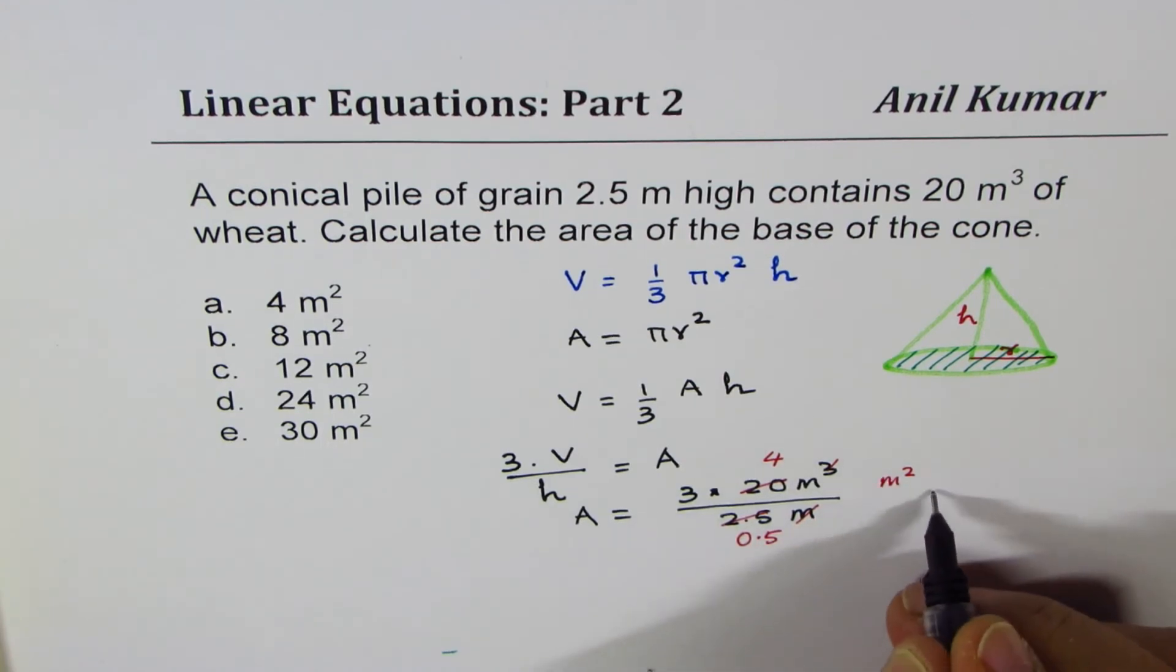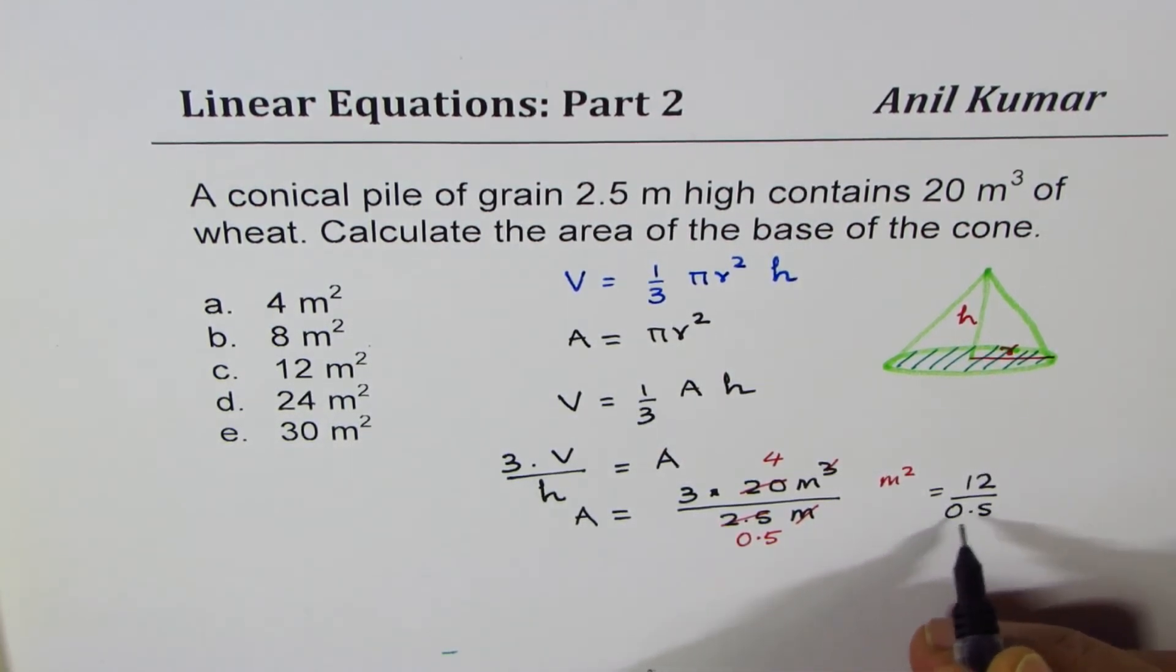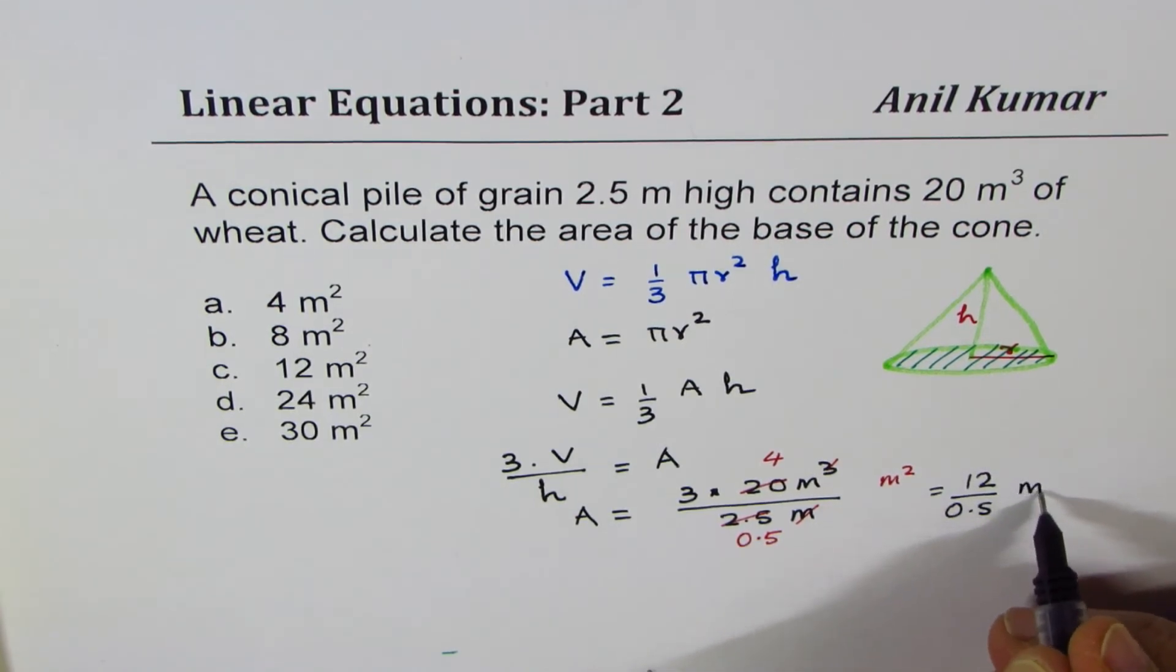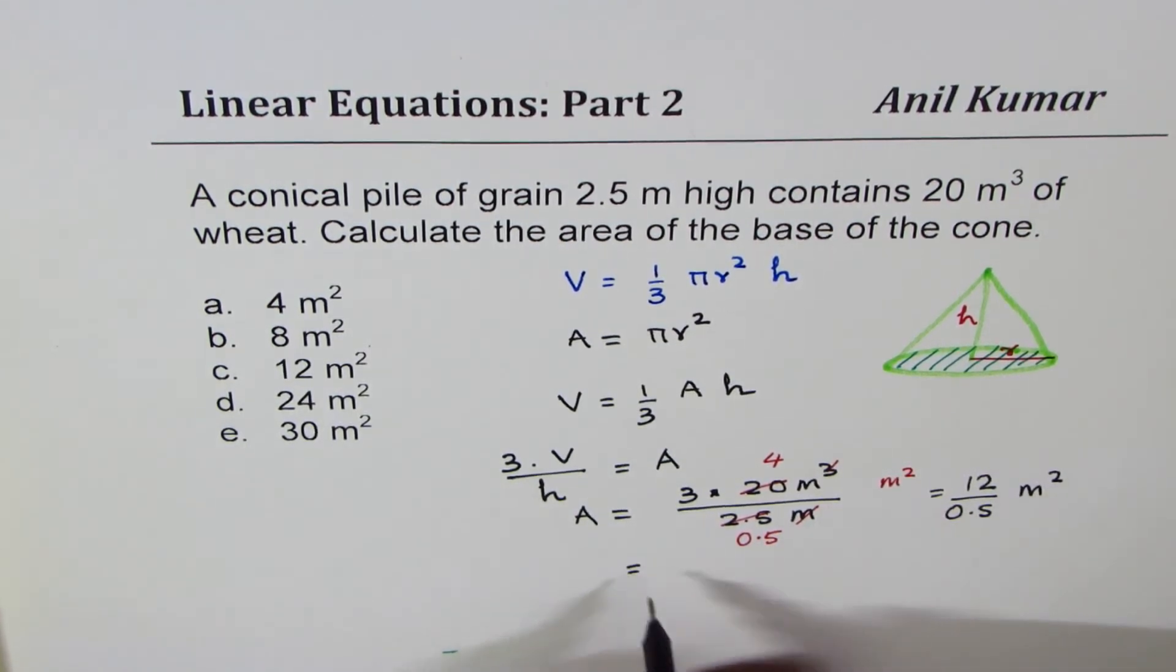So it is 12 divided by 0.5, which is half a square meter. Or it could be written as 24 square meters. Dividing by 0.5 is the same as multiplying by 2.